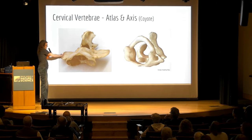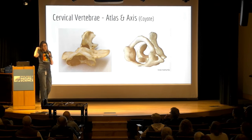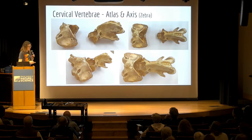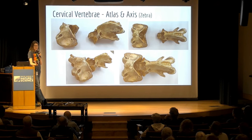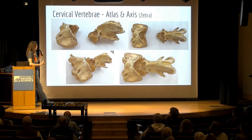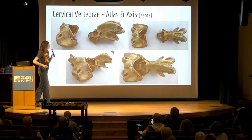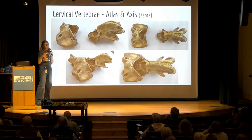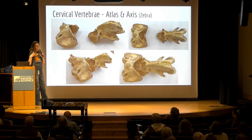This is because this animal needs to be able to support its head out away from its trunk, whereas that animal holds its head directly above its trunk. The zebra is going to be pretty similar looking to the coyote, with the exception of the dens. A lot of these larger quadrupeds are going to have a more cup-shaped dens that doesn't go nearly as far into the atlas, but provides more stability by being wider and thicker.